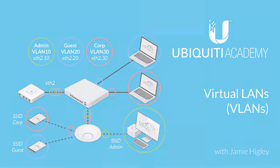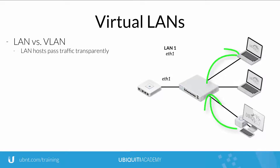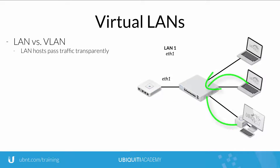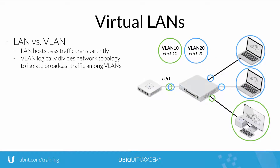Virtual LANs. By design, network hosts connected to the same local network topology, whether by means of an access point or switch, can pass traffic back and forth transparently. Often, a flat, transparent network topology can be undesirable, especially if users with different access privileges, such as guests and admins, send and receive data on the same LAN. By contrast, Virtual LANs, or VLANs for short, logically divide a local network topology in order to isolate traffic to separate broadcast domains.